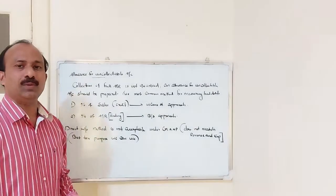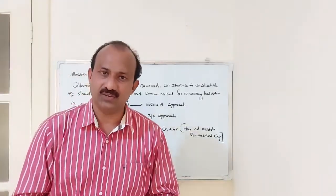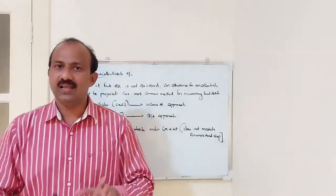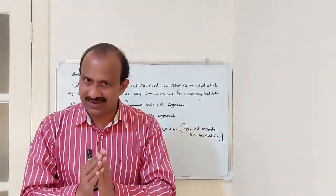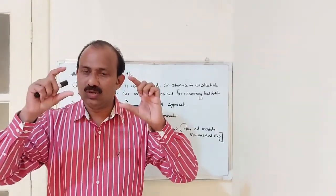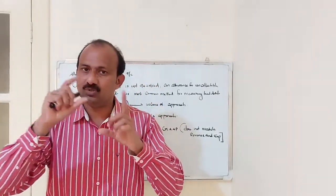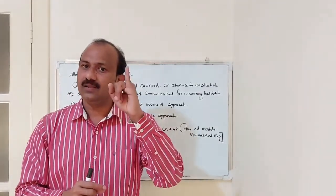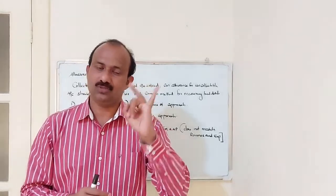But as a tax purpose, we are using the direct write-off method. So the important point to note is that an allowance for uncollectable account should be prepared. In order to measure the balance, there are two methods: the income statement approach and the balance sheet approach.